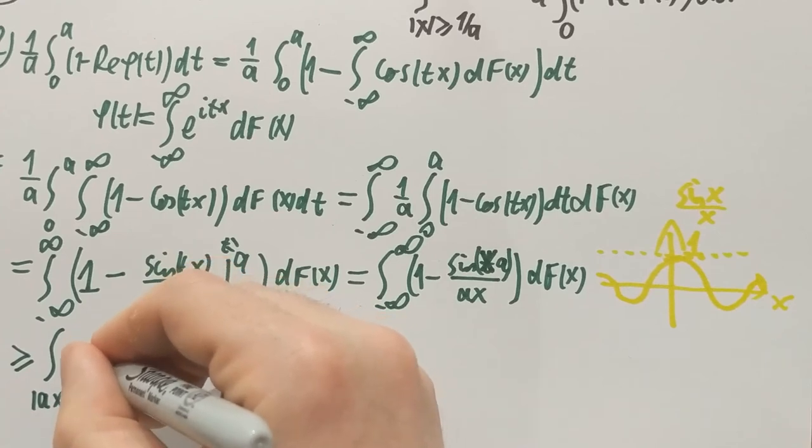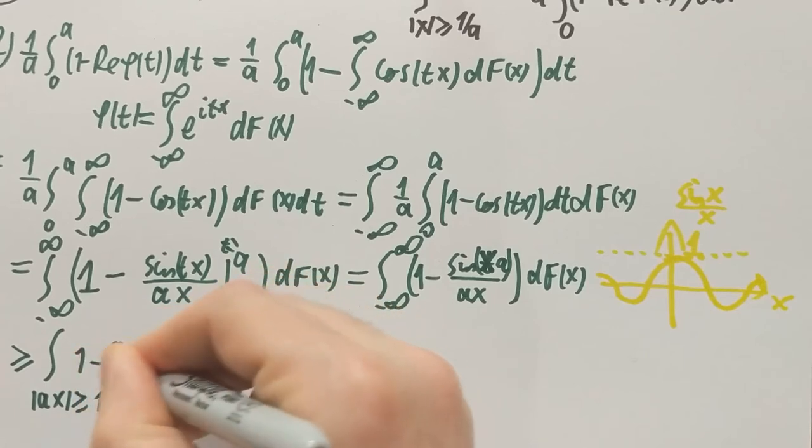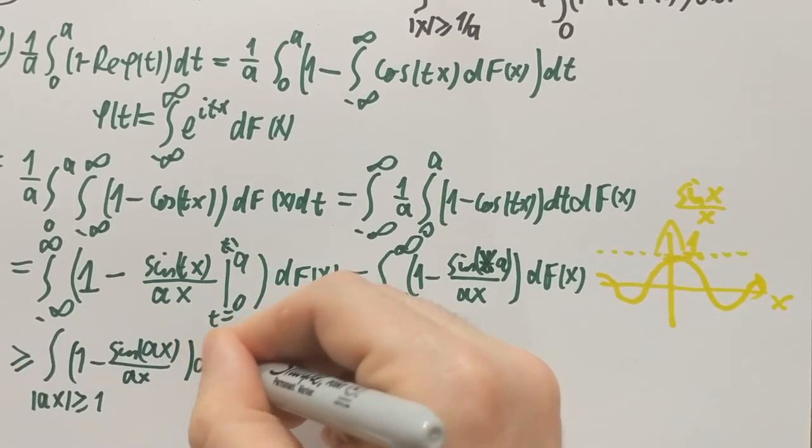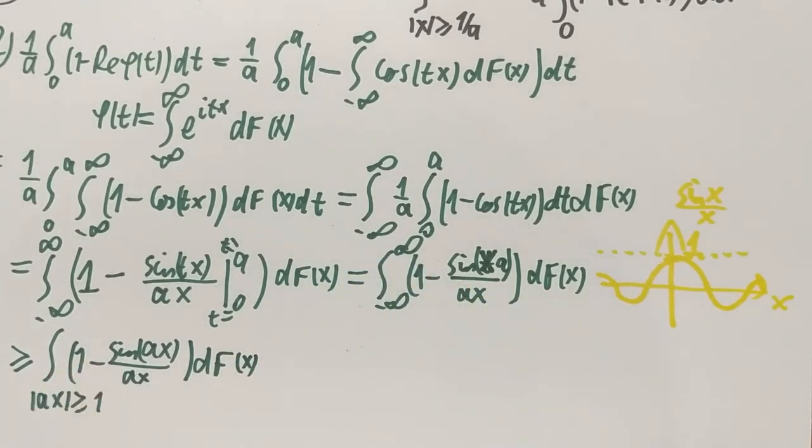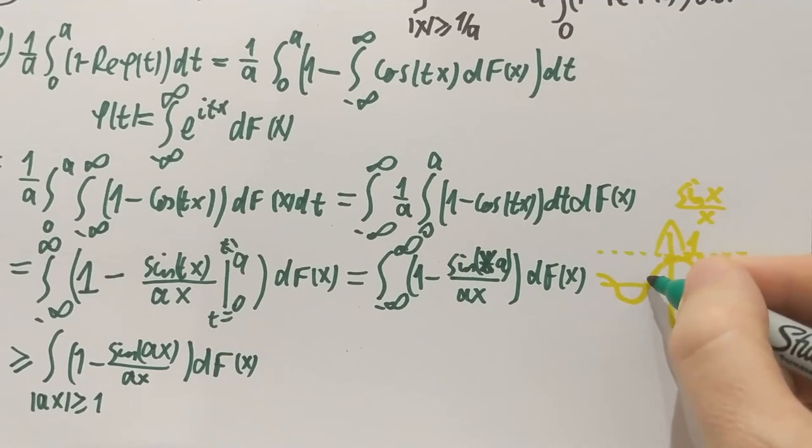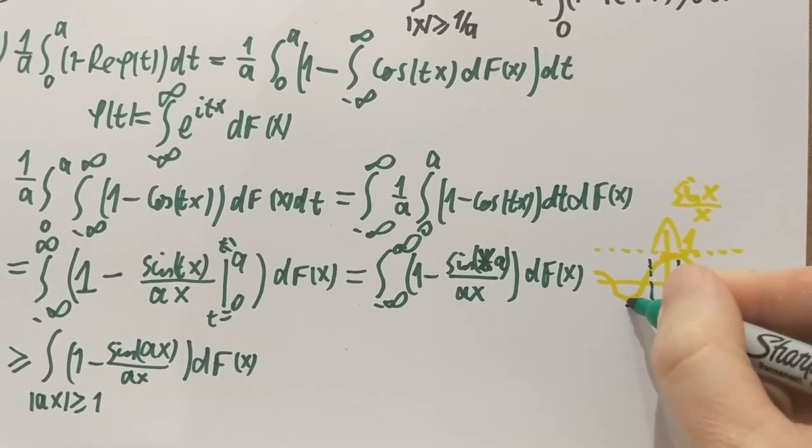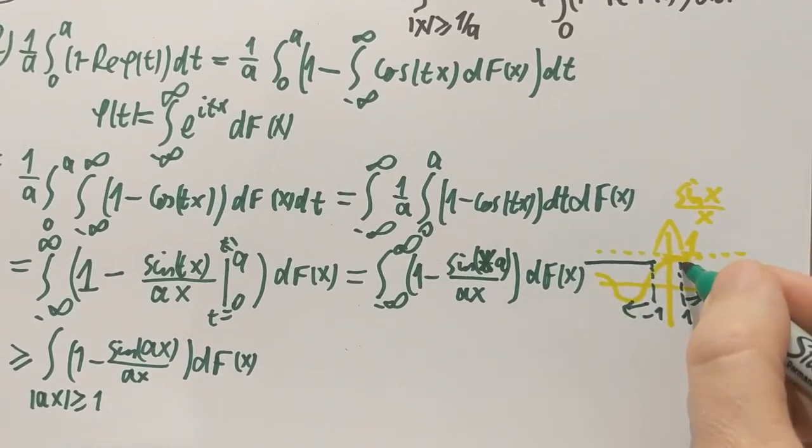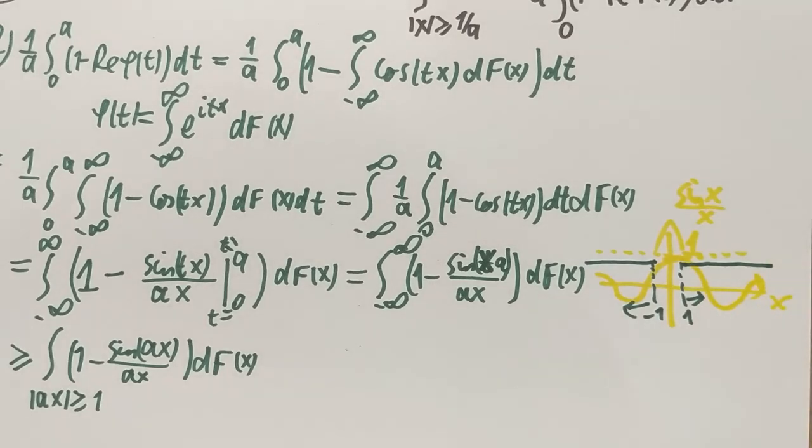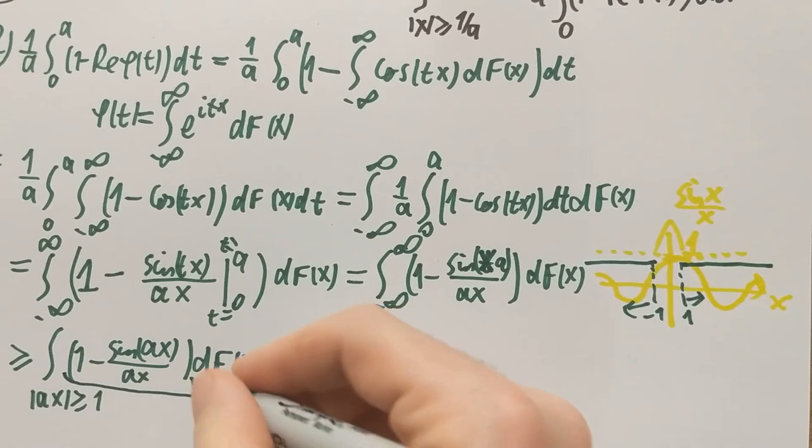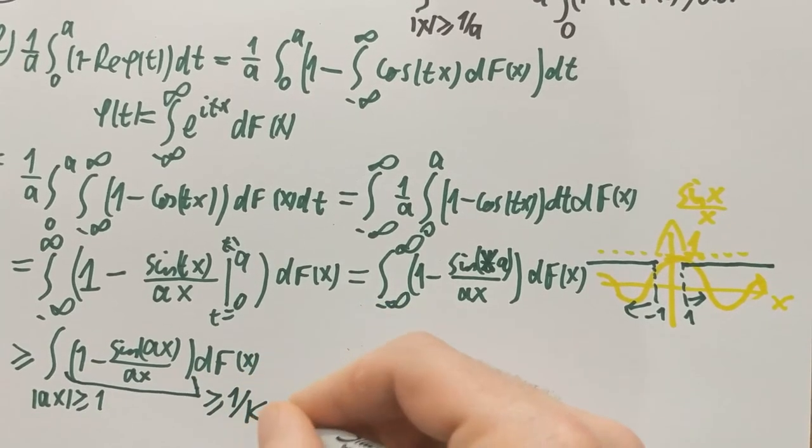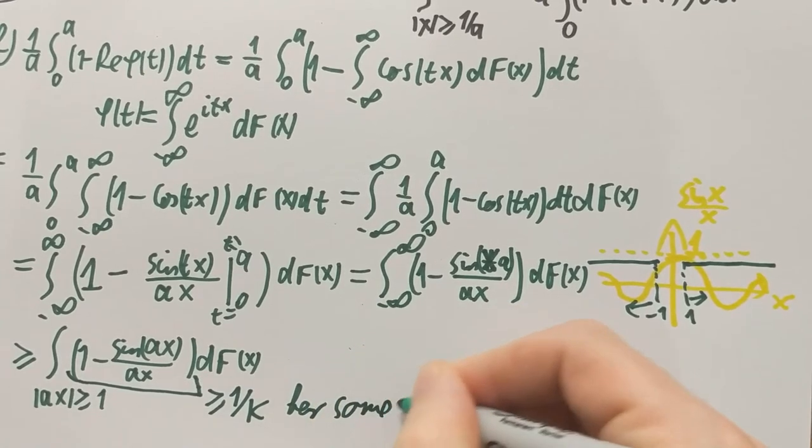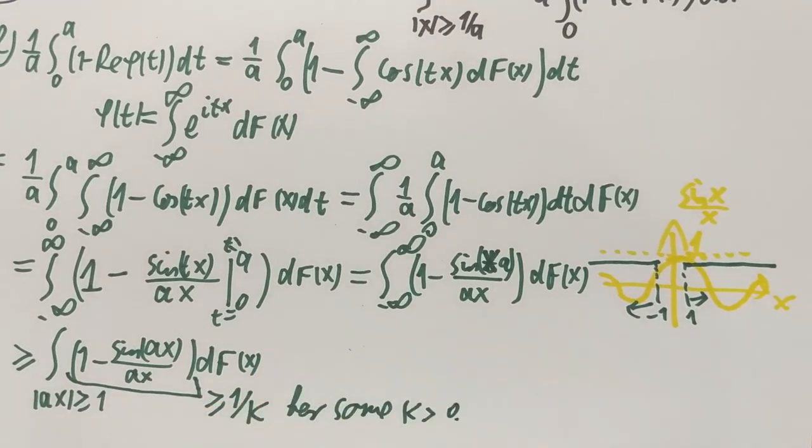So if I only integrate this on this set, ax mod larger than or equal to 1, integrate the same thing, 1 minus sine of ax over ax. Then I can only decrease in value because I lost some positive contribution on the complement of this set. And also, if the variable ax is at least 1, which means in absolute value, which means I'm looking at the region outside minus 1, 1, that means that my function values are strictly bounded away from 1. Anywhere I go in this interval, the values of the function are strictly bounded away from 1. So that means that this difference is bounded away from 0. It's larger than some constant, which I'm going to call 1 over k. So for some k, positive and finite, I have this bound here.